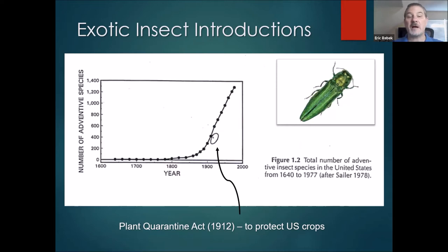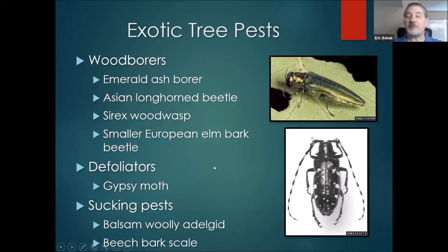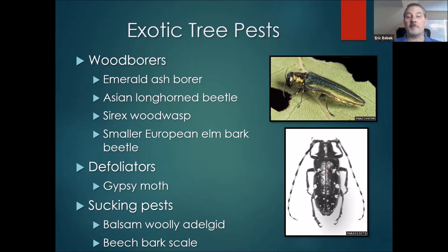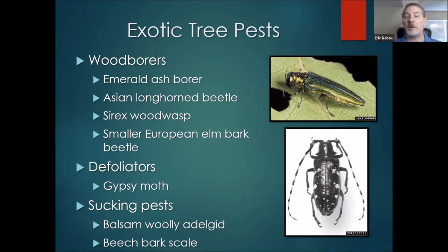Even beyond that law going into effect, we still see a significant increase in the number of invasive species through the late 90s, and this trend continues into the 2000s. When we're talking about exotic tree pest insects, they can include several different feeding guilds. These include wood borers — today we'll focus on emerald ash borer and Asian longhorn beetle — but there are others, including smaller European elm bark beetle, responsible for the spread of Dutch elm disease and the loss of millions of American elms. Defoliators including gypsy moth, and sucking pests with piercing-sucking mouthparts, including balsam woolly adelgid and beech bark scale, which have been causing devastation in their geographic ranges.